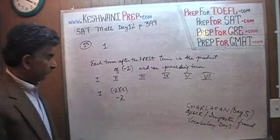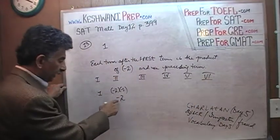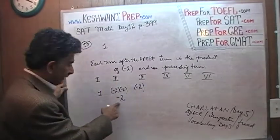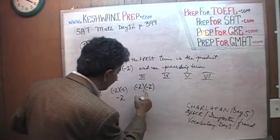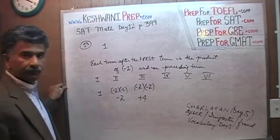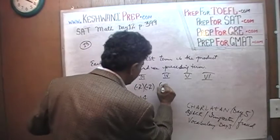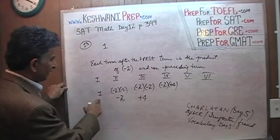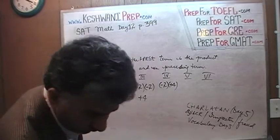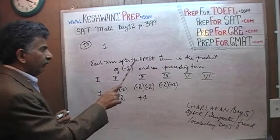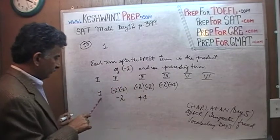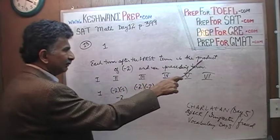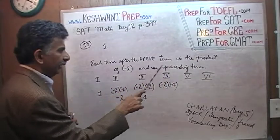The third term is going to be negative 2 times the term that came before it, negative 2 times negative 2. So that negative times negative is positive, we get positive 4. The one after that is negative 2 times positive 4. It is always negative 2 times the preceding term. Each term after the first term is the product of negative 2 and the preceding term.